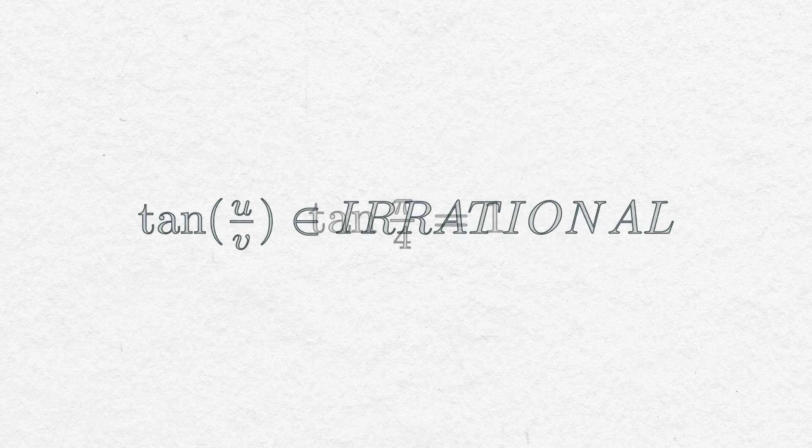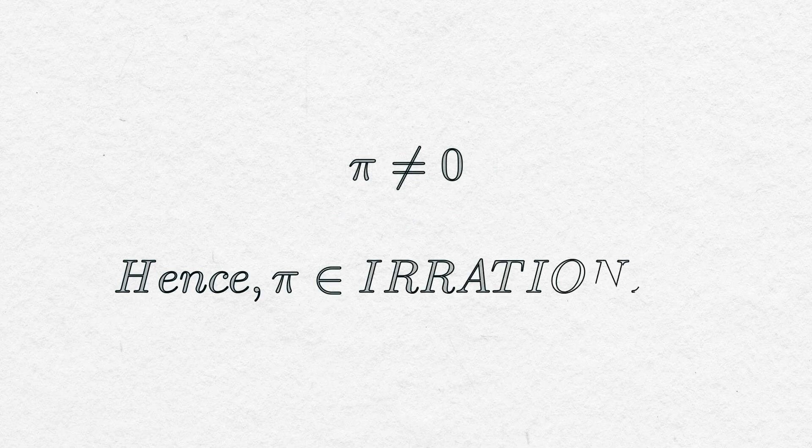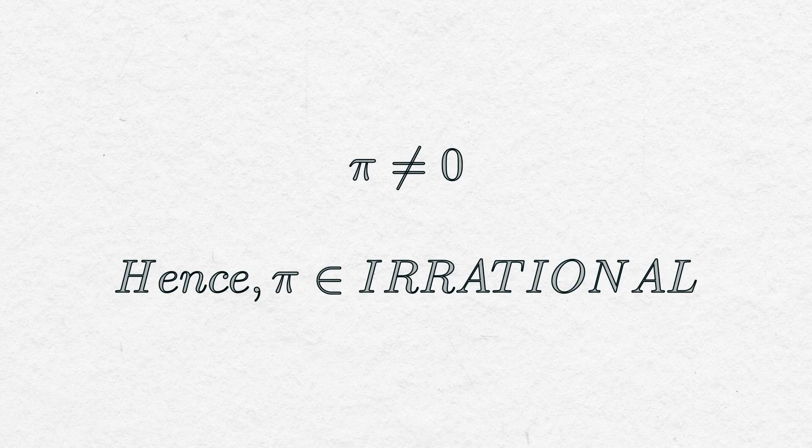Now we can put x as 45 degrees, or pi by 4, and it will give us 1, which is a rational number, meaning pi by 4 either has to be 0 or an irrational number. And from common sense, we all know it's not 0. So finally coming to our destination and proving pi is an irrational number.